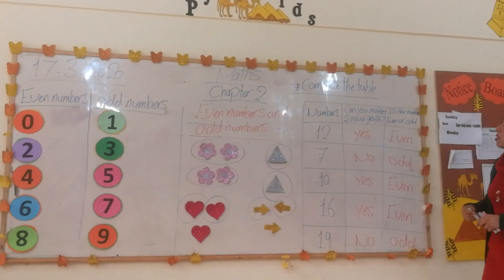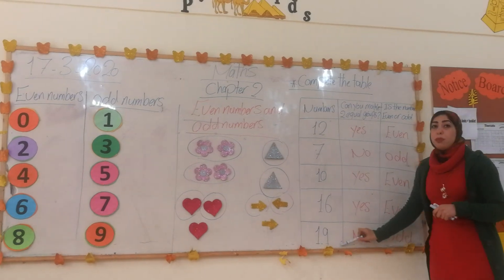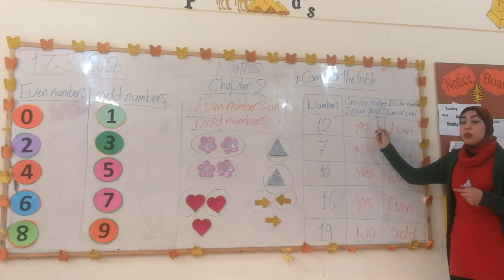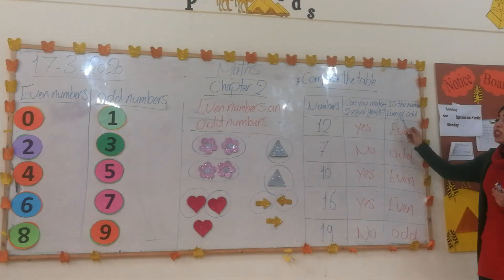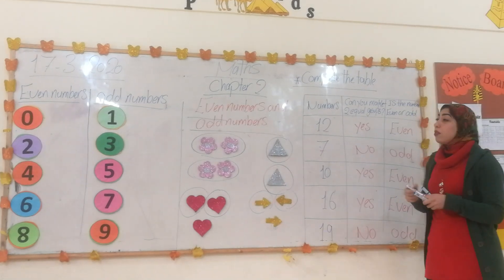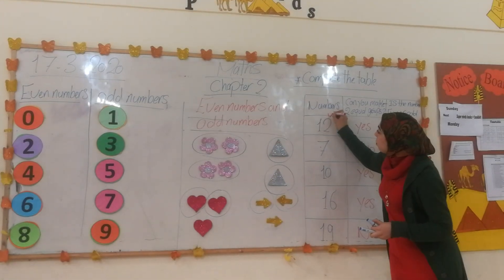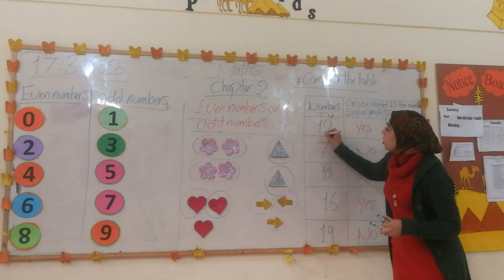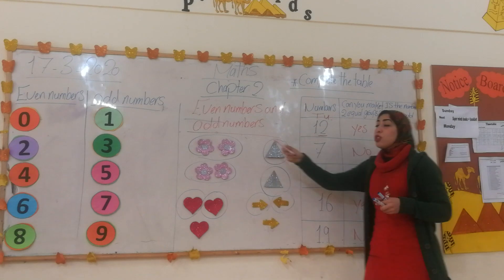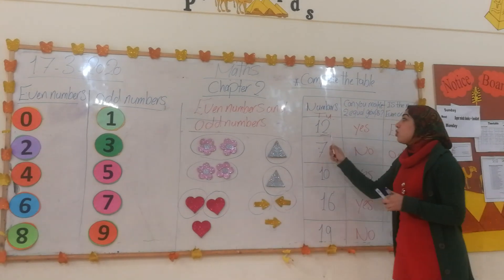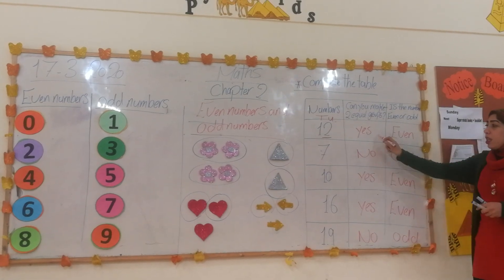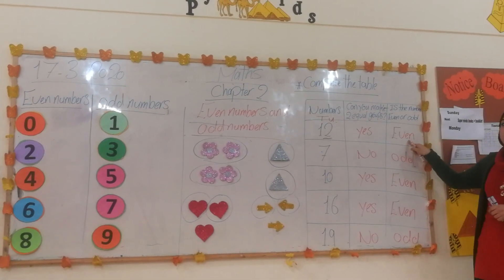Let's see some examples. Complete the table. We have six numbers and we want to know: can we make two equal groups — yes or no — and are these numbers even or odd? We have number 12. The ones digit is 2. Two is even, so yes, we can make two equal groups. So 12 is an even number.